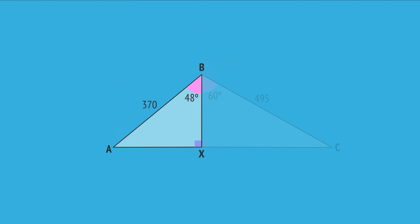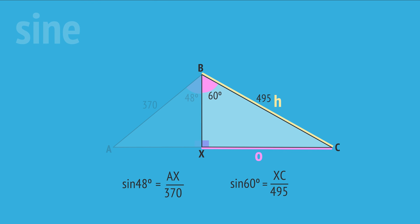Now in this right angled triangle, where we're interested in the hypotenuse and the opposite, we can use the sine ratio. And in this triangle, we're also interested in the hypotenuse and the opposite, so we can again use the sine ratio.